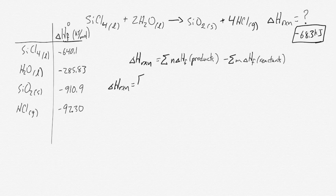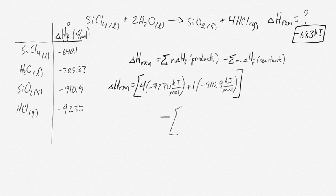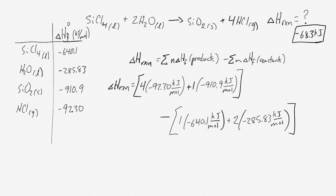For the summation method, the delta H for the overall reaction equals the sum of stoichiometric coefficients times delta H formation for products, minus the sum for reactants. So we have 4 times negative 92.3 kilojoules per mole for HCl, plus 1 times negative 910.9 kilojoules per mole for SiO2, minus 1 times negative 640.1 kilojoules per mole for SiCl4, minus 2 times negative 285.83 kilojoules per mole for H2O. When you do all of the additions and multiplications, the overall delta H reaction should work out to be the same as calculated with the first method: negative 68.3 kilojoules.